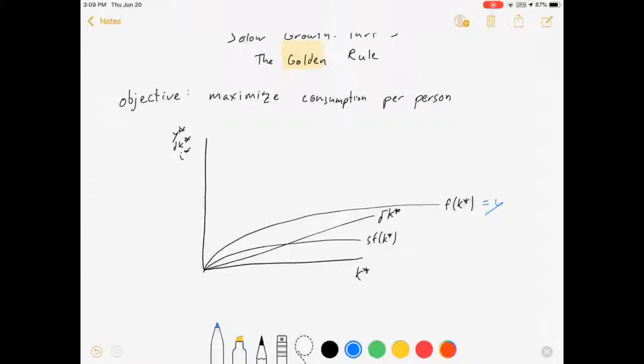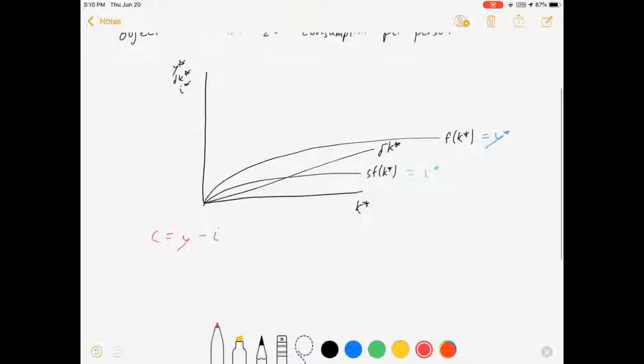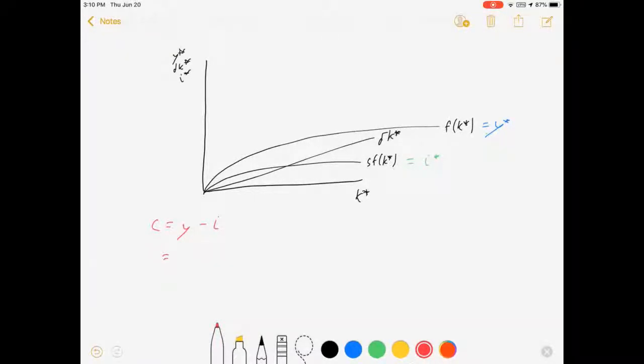Let's draw our investment line SF of K star and let's draw our actual production line. Now this one equals Y output per person, this one equals I - output per person in the steady state, investment per person in the steady state. And what I am interested in finding here is consumption per person in the steady state. Now consumption, remember we only have two things we can spend our money on: we can consume it or we can invest it. So consumption equals Y minus I, but we can rewrite that as being F of K star minus Delta K star.